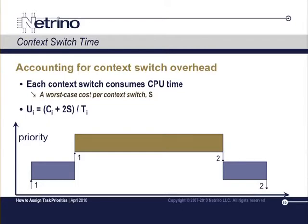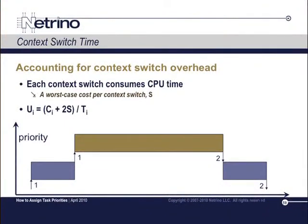Think back to that Mad Magazine folding exercise from earlier. The high-priority task takes control of the CPU by preempting some other task, then it runs to completion, and on the way out it hands control back to another task. So if we just think about that highest-priority task, it has one context switch on the way in and one context switch on the way out, and this happens every period. So in the worst case, the utilization number goes up by 2S over T.